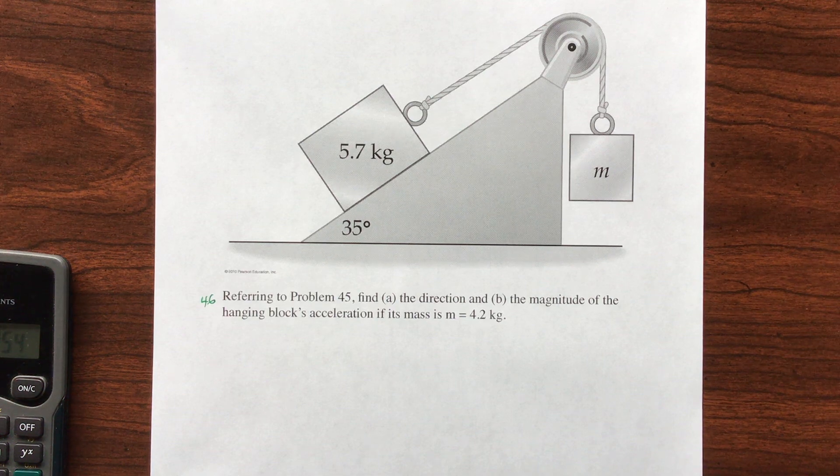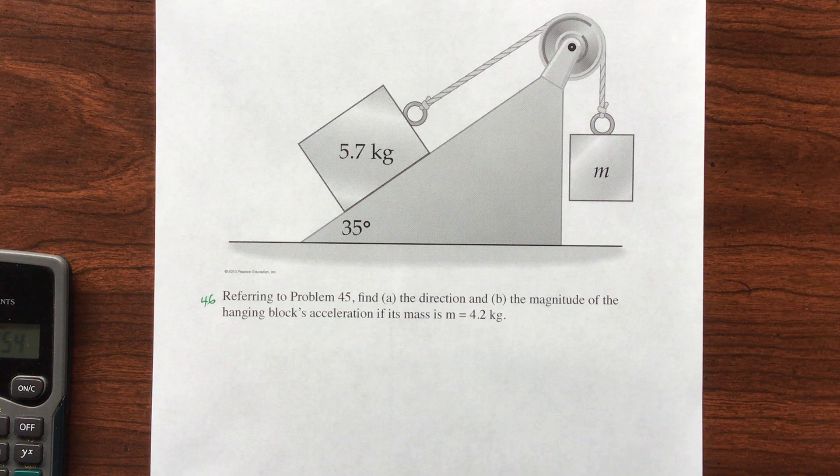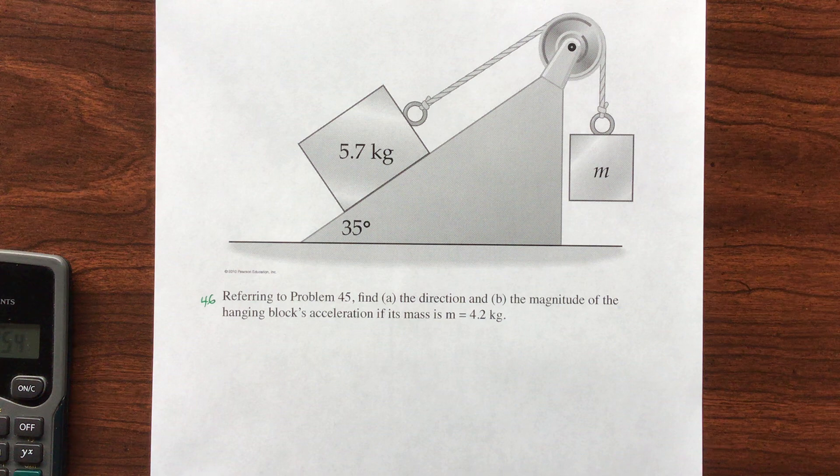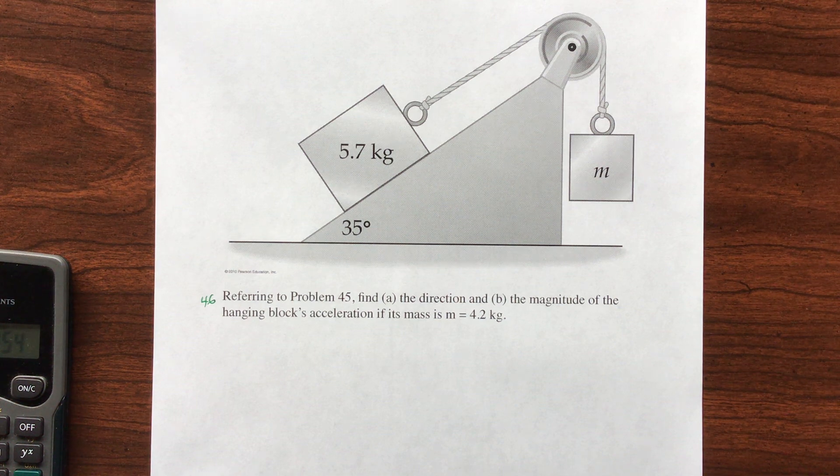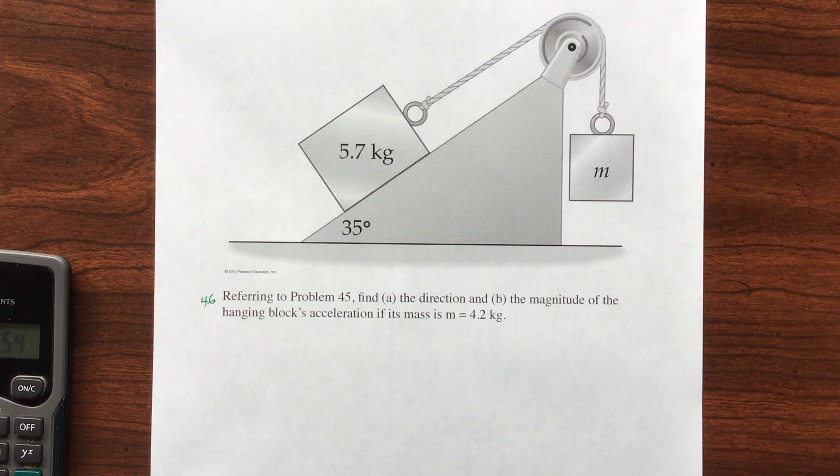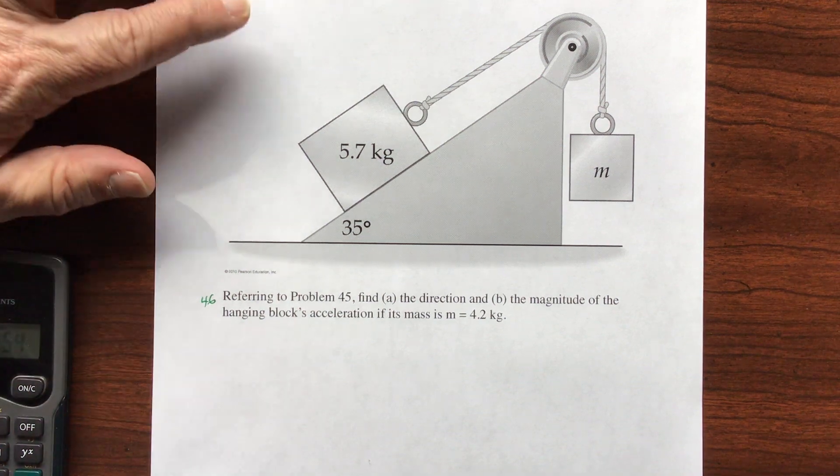Hello, this is question number 46 in chapter 6 of Walker Physics, 4th edition. The problem says, referring to problem 45, and I've got the picture from number 45 up on the top, find the direction and magnitude of the hanging block's acceleration if its mass is 4.2 kilograms.